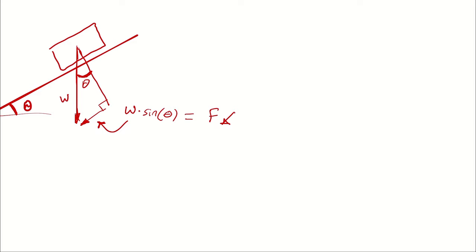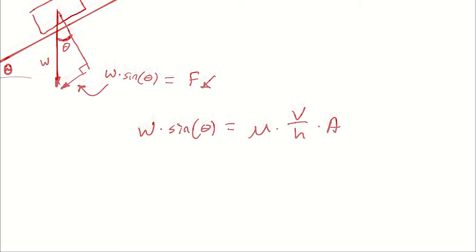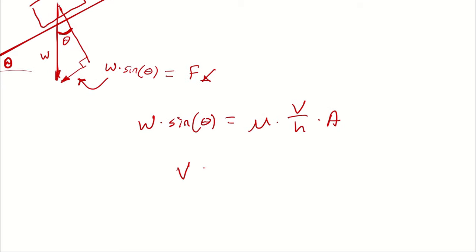I will say the weight of the block times sine of theta is equal to mu multiplied by the velocity of the block divided by h multiplied by the area of effect. I'm solving for the velocity of the block. Therefore, I can write velocity of the block is equal to weight times sine of theta divided by mu times A and h goes up here.